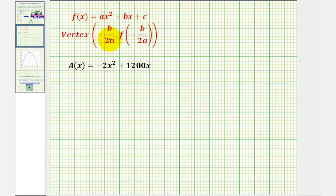and the y-coordinate, or the function value, would be f of negative b divided by 2a. So once we find the x-coordinate of the vertex, we'll then sub that value into our function to find the y-coordinate of the vertex.